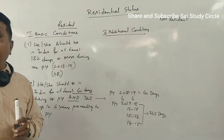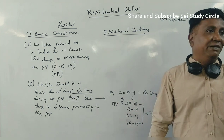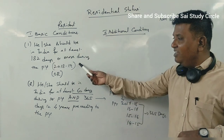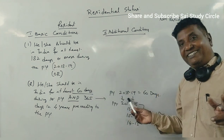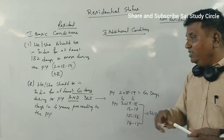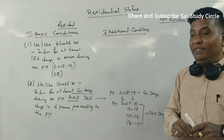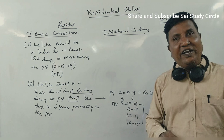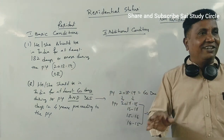The second basic condition is applicable if a person fails to satisfy the first basic condition. If a person fails to satisfy even the 60 days requirement — meaning they fail the second basic condition too — then this person becomes a non-resident. A person who does not satisfy any one of the basic conditions is called a non-resident. A person who satisfies any one of the basic conditions is called a resident.